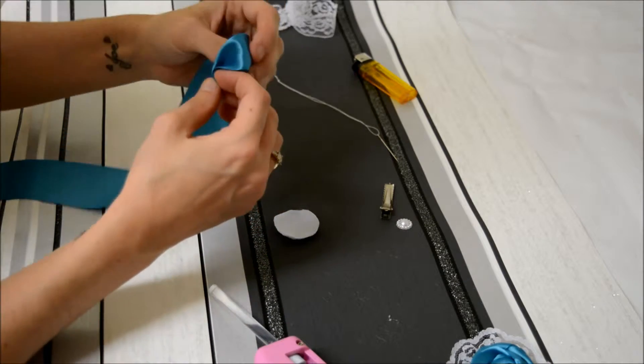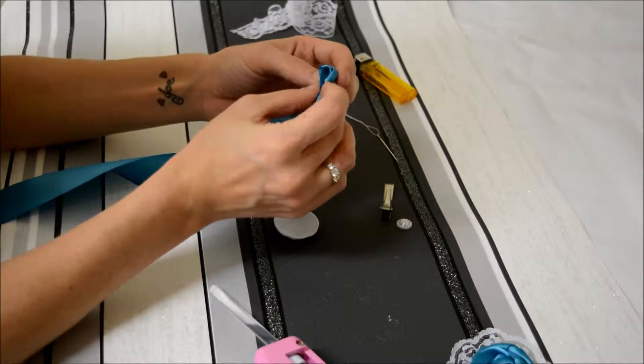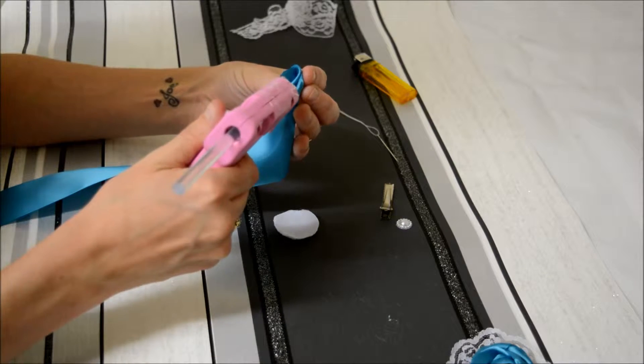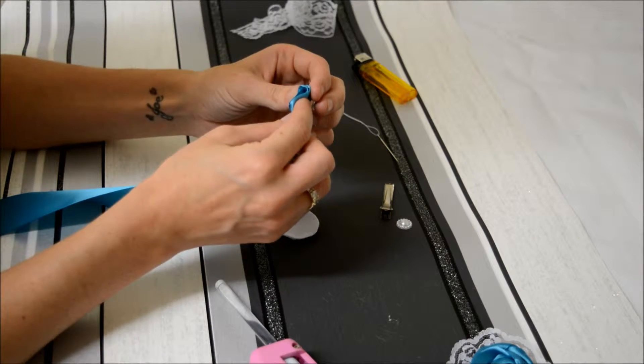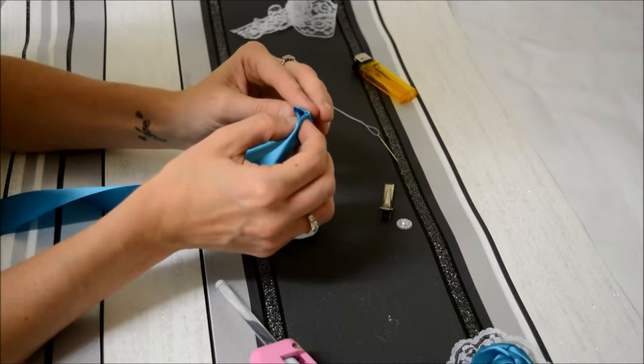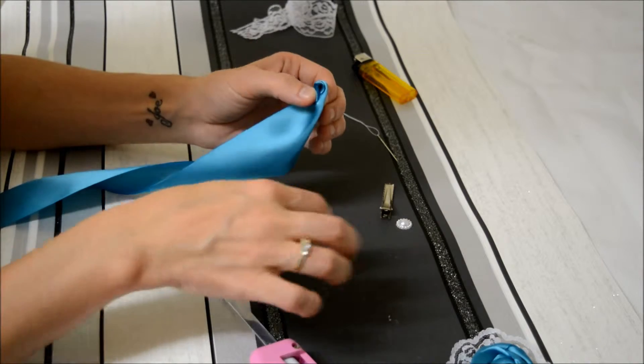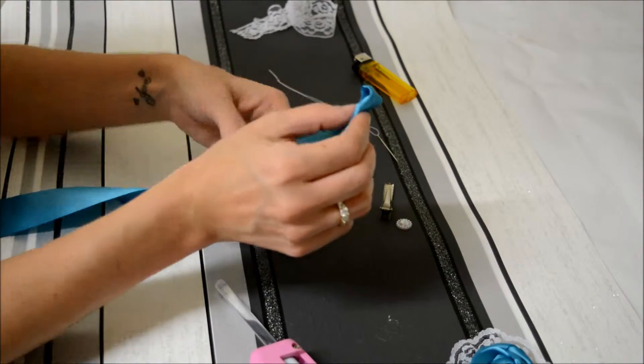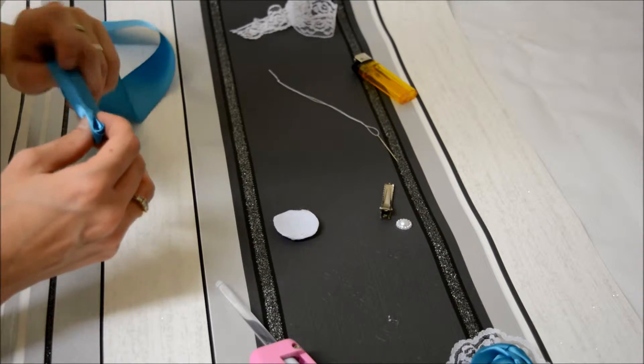Now once I've done that, I'm going to give my ribbon a bit of a twist. This part doesn't have to be perfect - in fact none of it does. I'm just going to squeeze that in together, just like that. There we go, and that will be the centre of my flower.